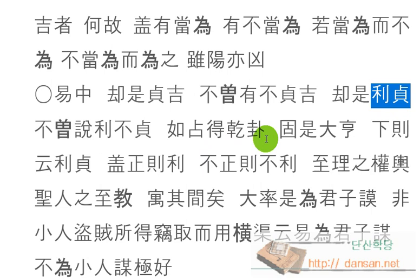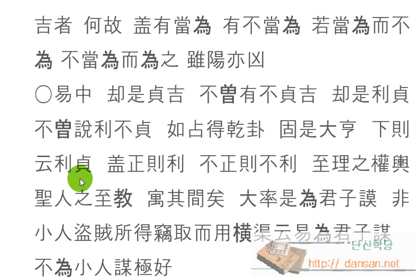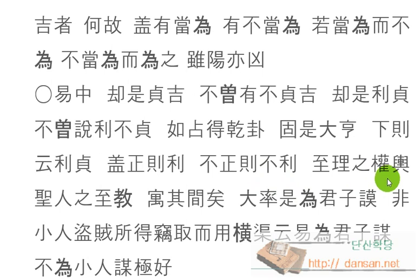정자는 원코, 형코, 이코, 정이다 이렇게 부렸지만. 원형이나 이정하니라, 주자는 크게 형통하지만 이정이다, 곧게 나가야만 이롭다 이렇게 했거든. 아래인즉 크게 형통하다고 하지만 그 아래에는 운이정하니, 곧게 나가야 이롭다라고 말을 했으니. 개정즉이요, 대개 고두면 이롭고, 부정즉 불리는 바르지 못하면 이롭지 못한 것은 지극한 이치의 범준에 있는 것이니, 성인지의 지교, 성인의 지극한 가르침이 우기간이라, 그 사이에 붙여진 거예요.